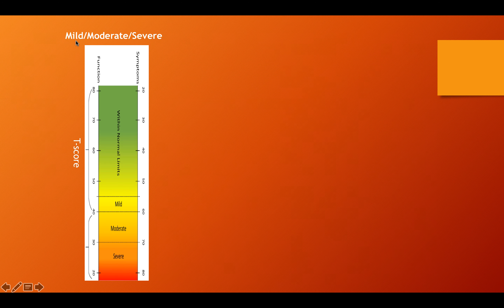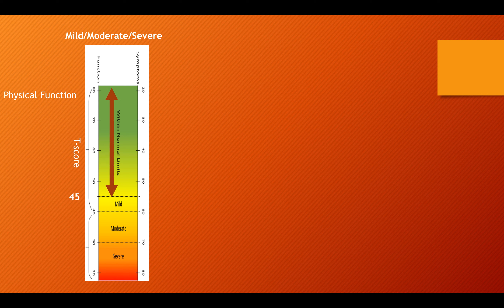Now let's shift to the category of severity. Looking at the heat map, within normal limits is shown in green, mild in yellow, moderate in orange-yellow, and severe in orange. For physical function, on the left-hand side of the screen, a score of 45 to the highest is within normal limits. From 40 to 45 is mild limitation in physical function. From 30 to 40 is moderate limitation in physical function, and below 30 is severe limitation in physical function.